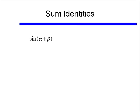Let's start off with the sum identity for sine. If I have sine of alpha plus beta, this is equal to sine of alpha times cosine of beta, plus cosine of alpha times sine of beta.